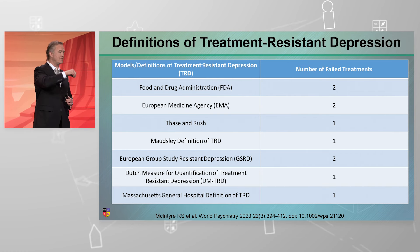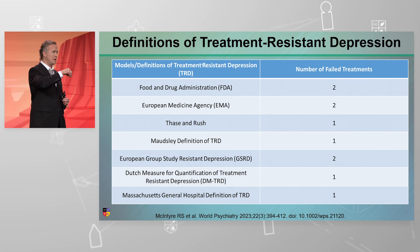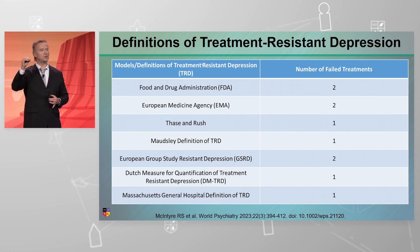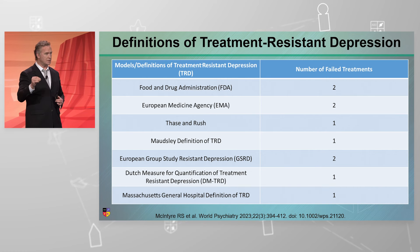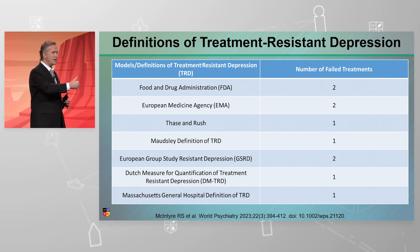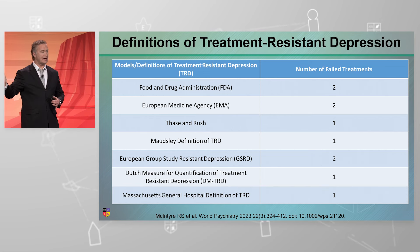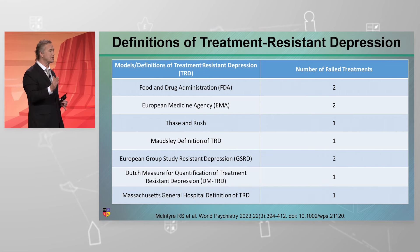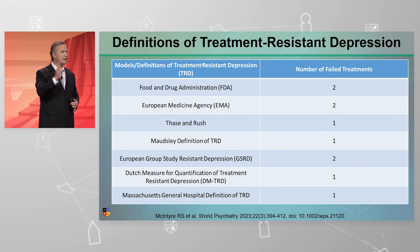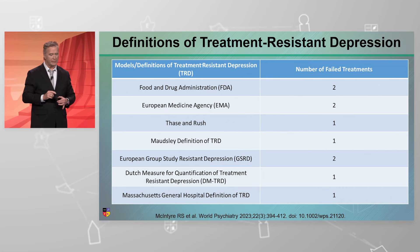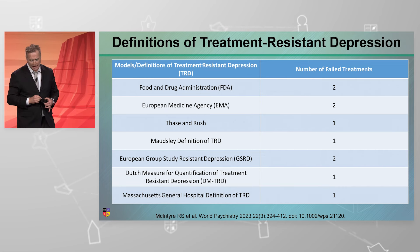He didn't even have difficult-to-treat depression, and it turns out that his non-response to SSRIs, SNRIs, and a variety of treatments had no bearing on what he got next — which was ketamine, by the way — to treat his illness. He was receiving repeat infusions of IV racemic ketamine.